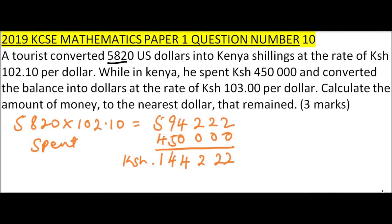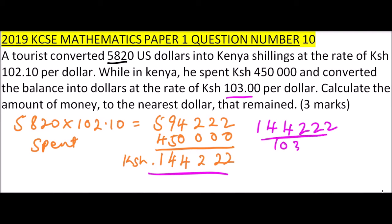Because he is going back to his country — let's say the United States of America — he cannot go with Kenyan money, so you have to change it. To change, you divide at the higher value, so that the difference is what the bank or Forex Bureau will make as profit. So you divide 144,222 by the exchange rate of 103.00, and using your calculator you should get approximately $1,400 to the nearest dollar. That is the amount of money in the form of dollars that he goes back with.